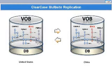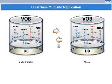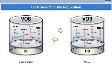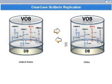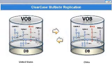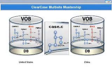Upon subsequent changes to the VOB database, the process is duplicated at configurable times at both locations, so that development between the two replica VOBs stays in sync, while allowing developers at each location to work on ClearCase VOBs at local LAN speeds.